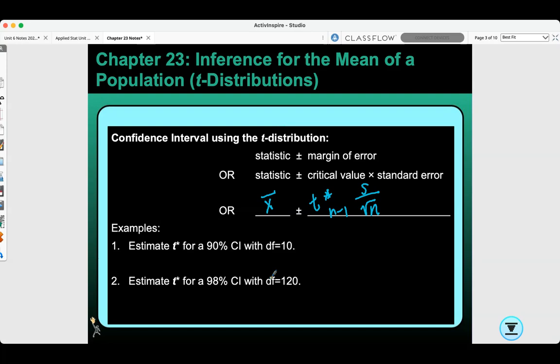We're going to estimate T-star for a 90% confidence interval with degrees of freedom 10. T-star with 10 degrees of freedom, using your table, would be 1.812. However, if you notice on your table, for a 98% confidence interval with degrees of freedom of 120, T-star 120 is not on your table. You would have to use 2.364 from 100 degrees of freedom. However, using your calculator, you can get the exact T-star. Inverse T with 0.99 and 120 degrees of freedom gives about 2.358. Just make sure you state that in the problem if you're using your table.